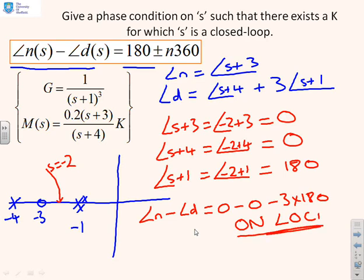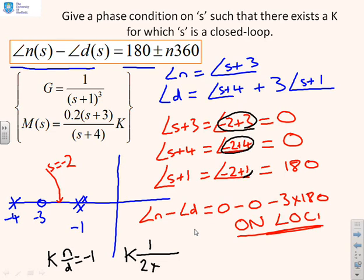Now, if you wanted to find out the value of K, then what I would have to do next is K into n over d equals minus 1. I can write this now. I've got K. Now n was just 1. D was 2 times 1 cubed, with a minus sign. So you'll see that gives you 1 if I take the minus signs out. Therefore, it tells you that K has to be equal to 2.